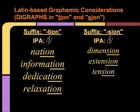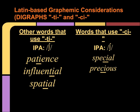When referring to words that are Latin-based, many of the graphemic considerations fall into certain patterns. For example, we mentioned the digraph SH and the suffix -SHUN spelled T-I-O-N and S-I-O-N. So we have words such as 'nation,' 'information,' 'dedication,' and 'relaxation.' We also have words such as 'dimension,' 'extension,' and 'tension.'